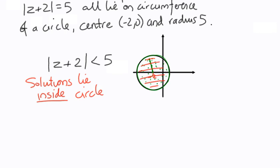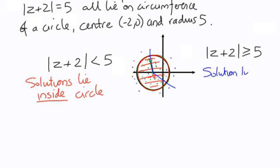If we consider modulus of z plus 2 is greater than or equal to 5, there are two satisfying conditions: the equal part means solutions lie on the circle, and the greater-than part means the distance could be slightly bigger than 5 units from the center — so those points lie outside the circle. The explanation would be that the solutions lie on, or outside, the circle. We use the equation to identify the circle shape, then use the inequality to determine inside or outside.